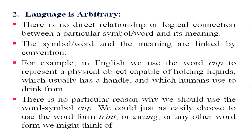Arbitrariness means there is no direct or logical connection between a particular symbol or word and its meaning; they are linked by convention. For example, in English, we use the word 'cup' for a drinking vessel with a handle, but there is nothing in the shape of a cup that prompts the combination of sounds ka-aa-pa. English speakers could have used 'trent' or 'zwang' — black could have been called white and vice versa.